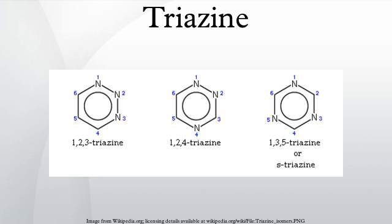The more common 1,3,5-isomers are prepared by trimerization of nitrile and cyanide compounds, although more specialized methods are known. The 1,2,3 and 1,2,4-triazines require more specialized methods.